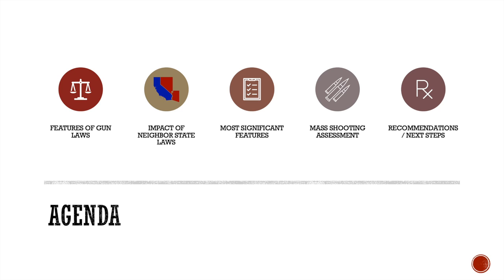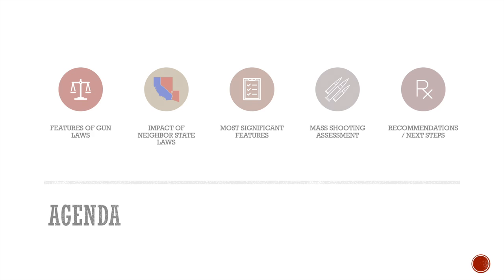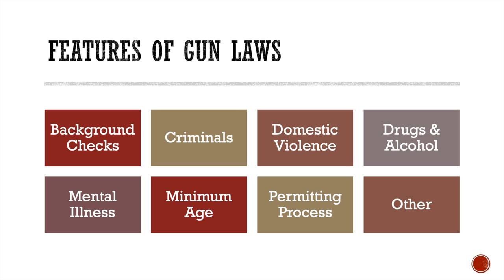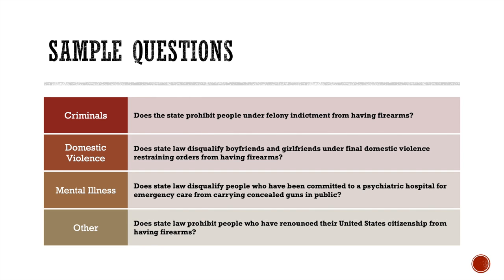The Everytown Research database frames features of gun laws into a collection of 85 yes/no questions. Each question falls into one of eight categories including mental illness, domestic violence, criminal history, etc. To give you a sense of the general types of questions, let's look at a few examples. First: are felons prohibited from having firearms? What about people with domestic violence restraining orders, or individuals committed to a psychiatric hospital for emergency care? And finally, what about those who have renounced their U.S. citizenship?